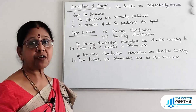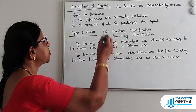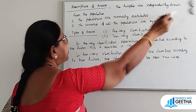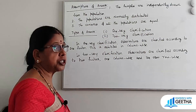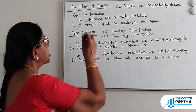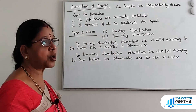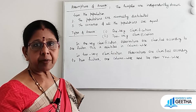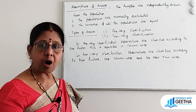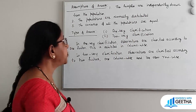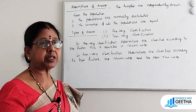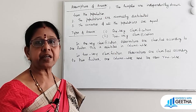Now we will talk about the assumptions of ANOVA. First, the samples are independently drawn from the population. Second, the populations are normally distributed. Third, the variances of all the populations are equal.